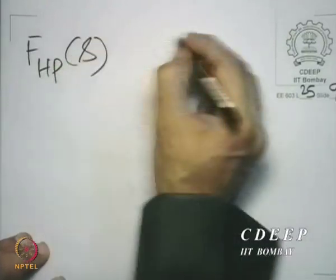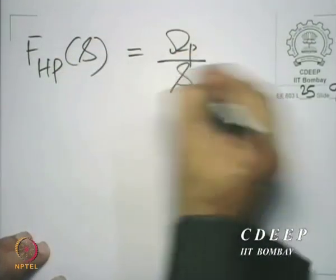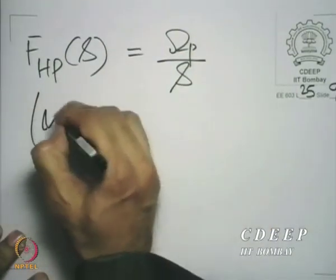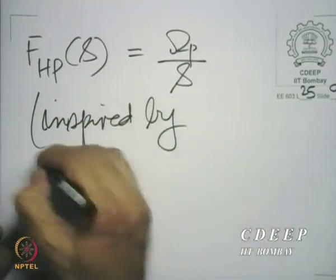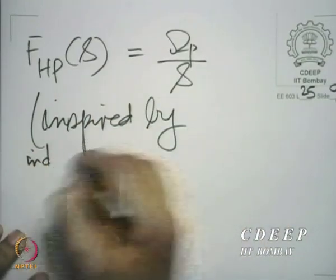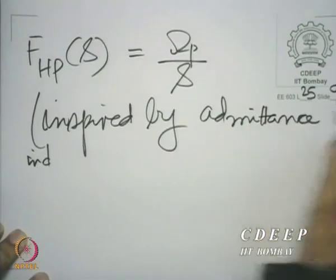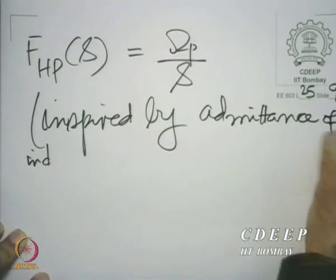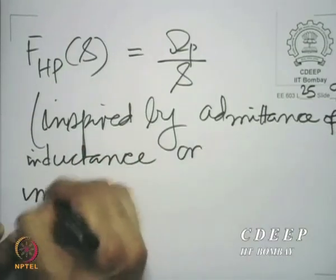All that we need to do is to consider a transform of the form: f_highpass(s) = ωp / s. This is simple, inspired by the admittance of an inductance or the impedance of a capacitance.